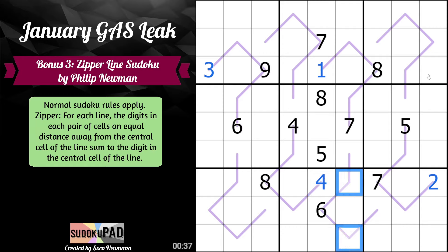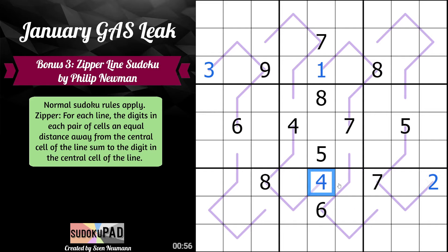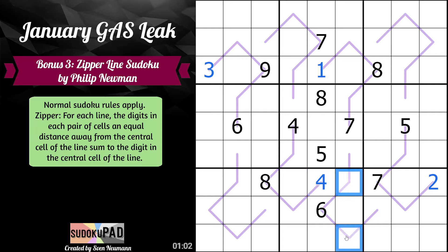How do we make six in two digits? Normally there are two ways, but for a zipper we could do double three — except double three can't exist here. And four just sees both of these cells by Sudoku, so this must be one-five.